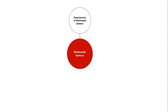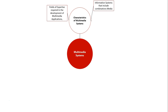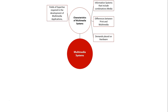Firstly, we have Characteristics of Multimedia Systems. These characteristics include fields of expertise required in the development of multimedia applications, information systems that include combinations of media, differences between print and multimedia, and demands placed on hardware.